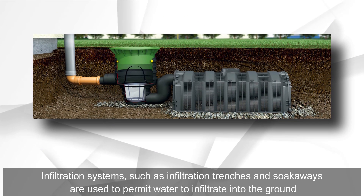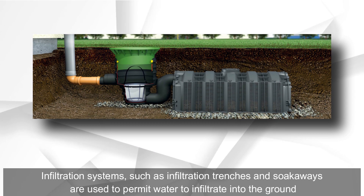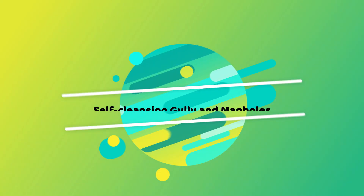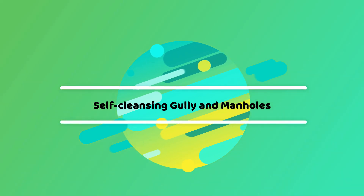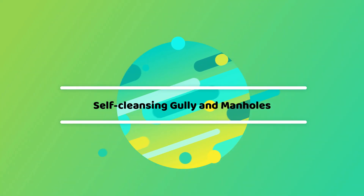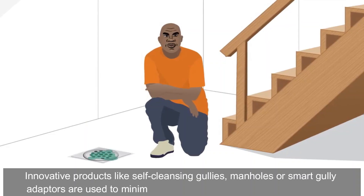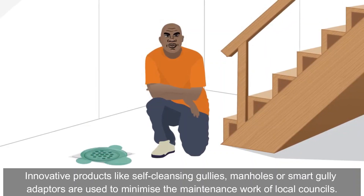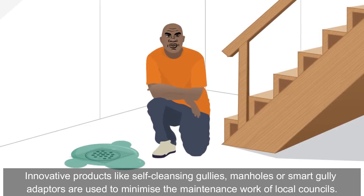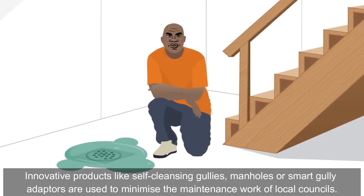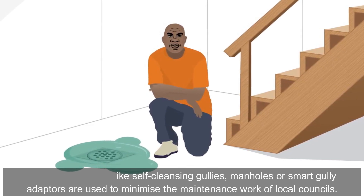Infiltration systems such as infiltration trenches and soakaways permit water to infiltrate into the ground. Innovative products like self-cleansing gullies, manholes, or smart gully adapters are used to minimize the maintenance work of local councils.